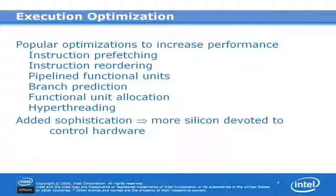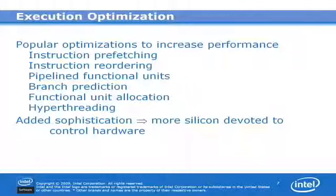Finally, hyperthreading takes advantage of multiple functional units. If one thread is not using all of the functional units, another process that can use those idle units can be merged in, executing two processes simultaneously using different functional units. All of these things are nice, except the programmer can't directly affect them — they're all devoted to hardware. As we add sophistication to the hardware, more and more silicon must be devoted to prefetchers, branch predictors, and hyperthreading allocation.